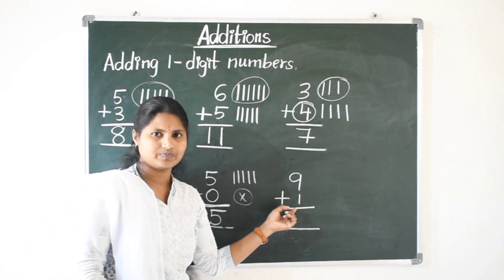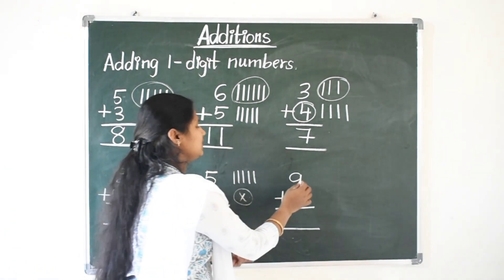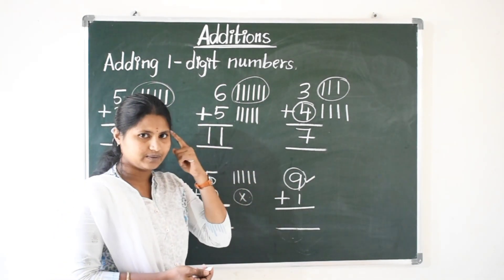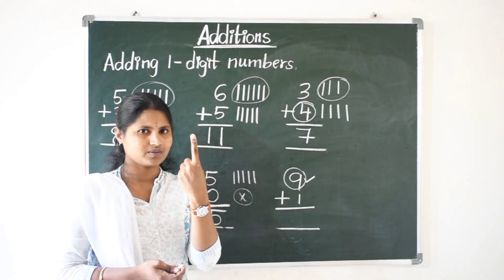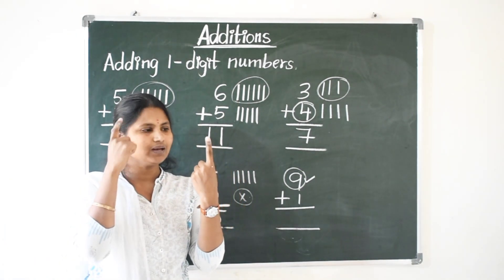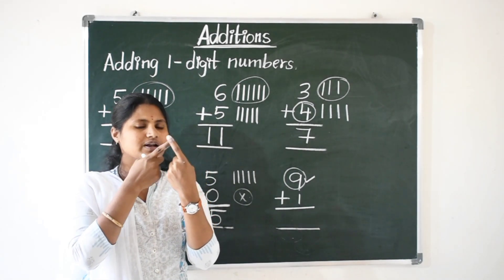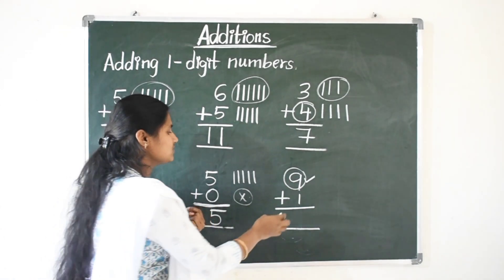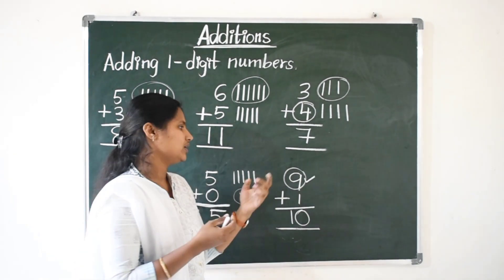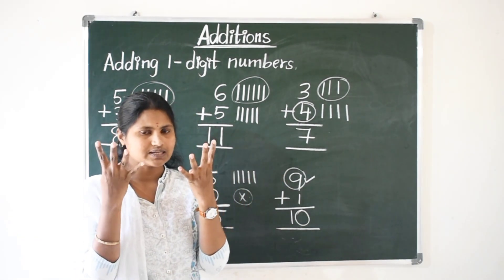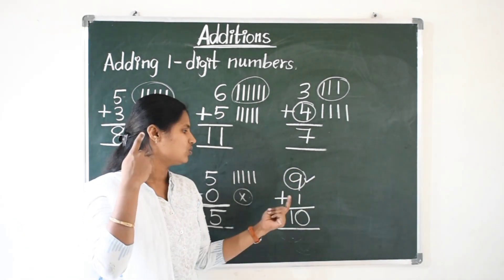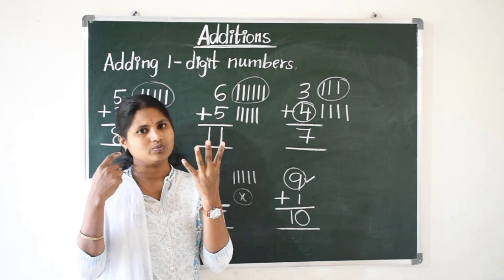Nine plus one. Here what is the big number? Nine is the big number, so keep nine in your mind and open one finger. Nine plus one — nine after one more number is ten. Nine plus one gives ten. So we can add numbers by opening fingers and counting, drawing lines and counting, or keeping the big number in mind and opening the other addend's fingers and counting.